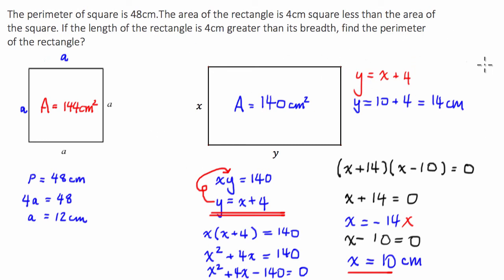So the question is asking for the perimeter of the rectangle. Hopefully, you're aware the perimeter of a rectangle is equal to 2 times the width, in this case X, plus 2 times the length, which is equal to Y. So this is going to equal 2 times the width, which is 10. So 2 times 10 is 20, plus 2 times the width, which is 14. So that's going to be 28. So the perimeter is going to be equal to 48 centimeters.